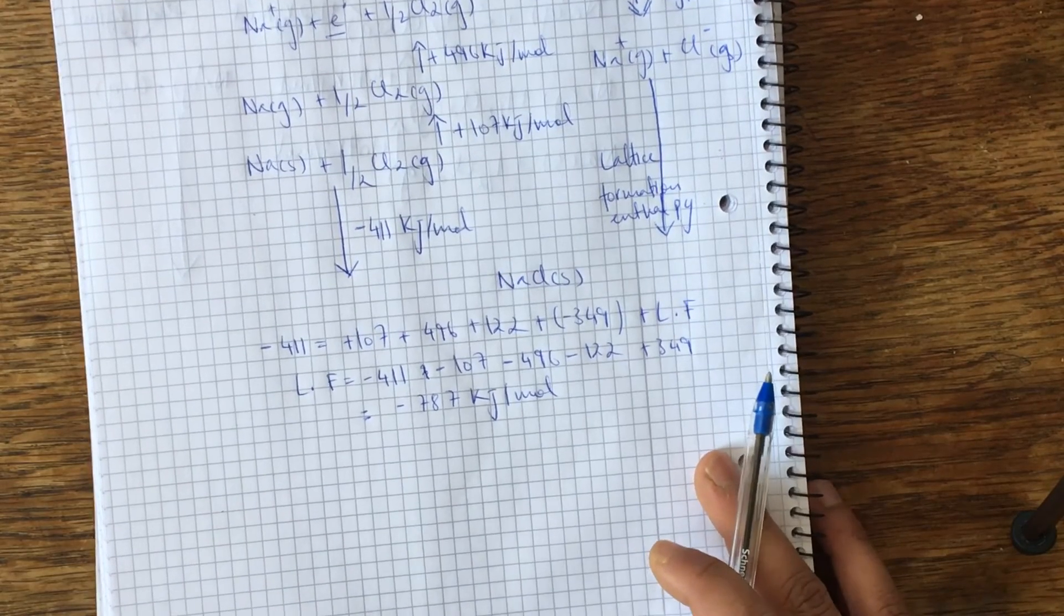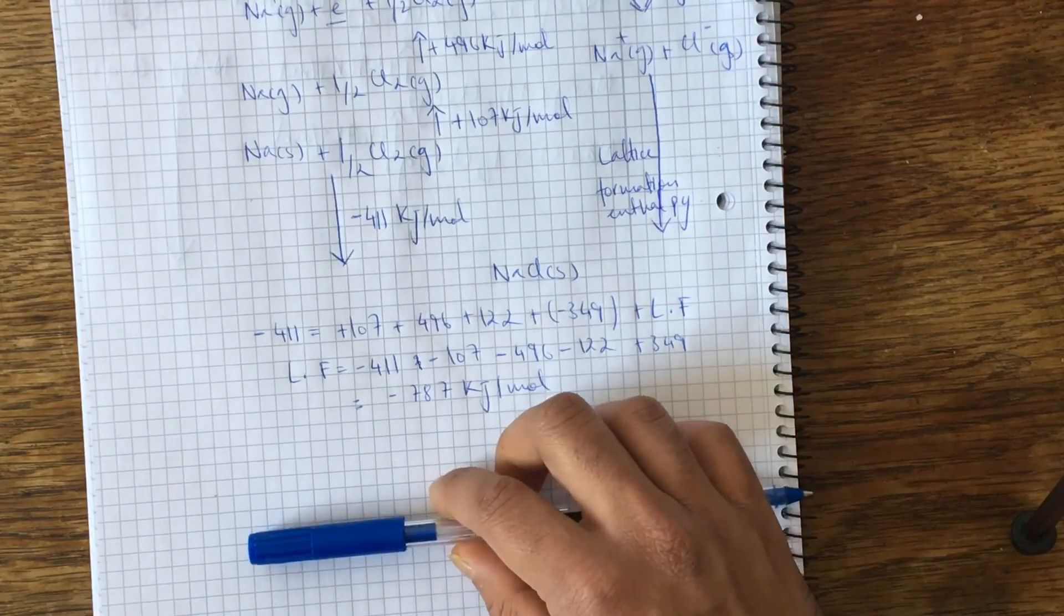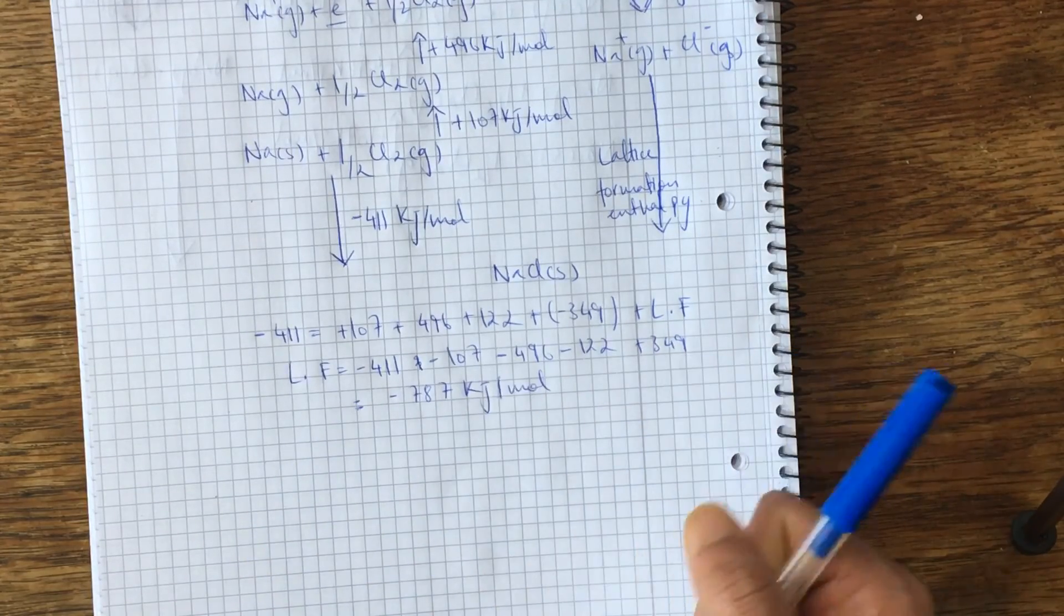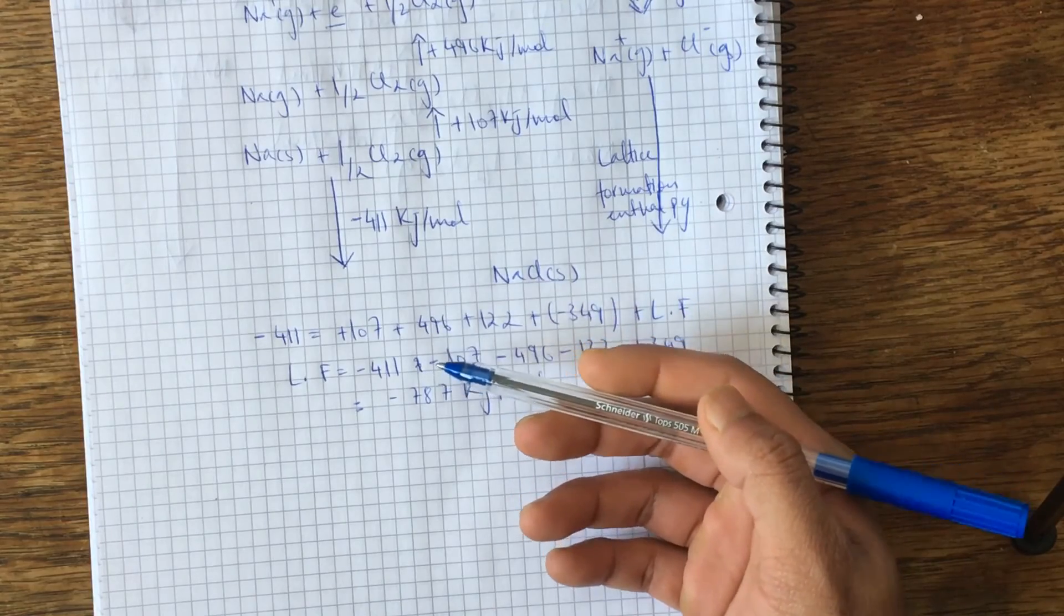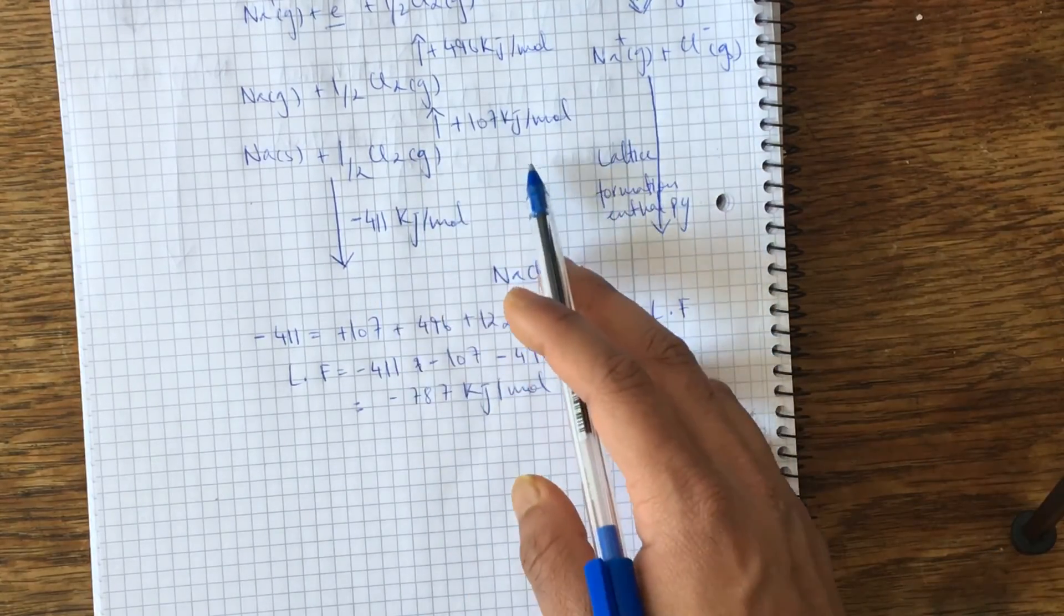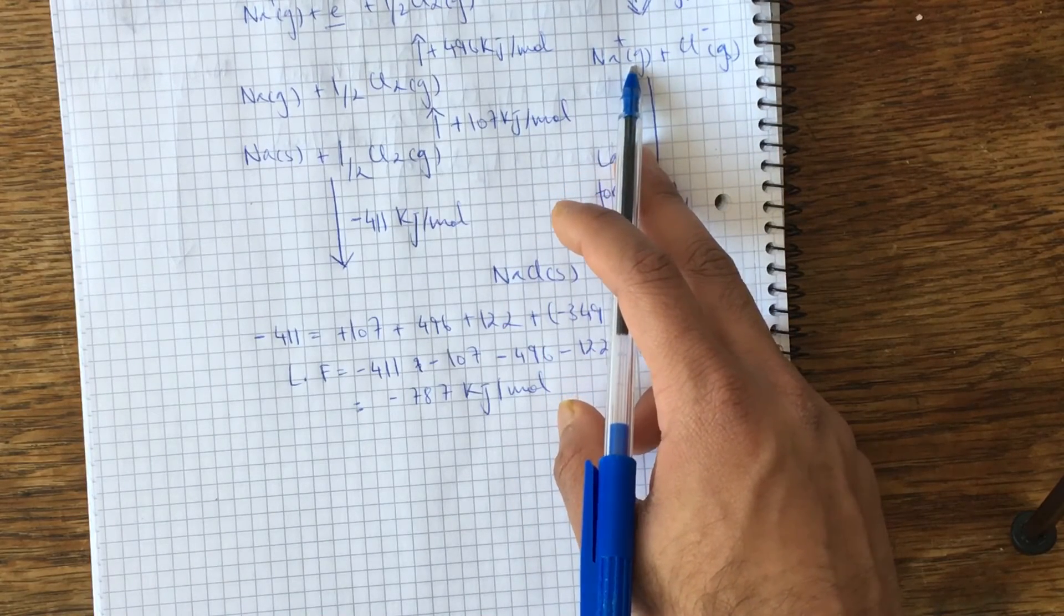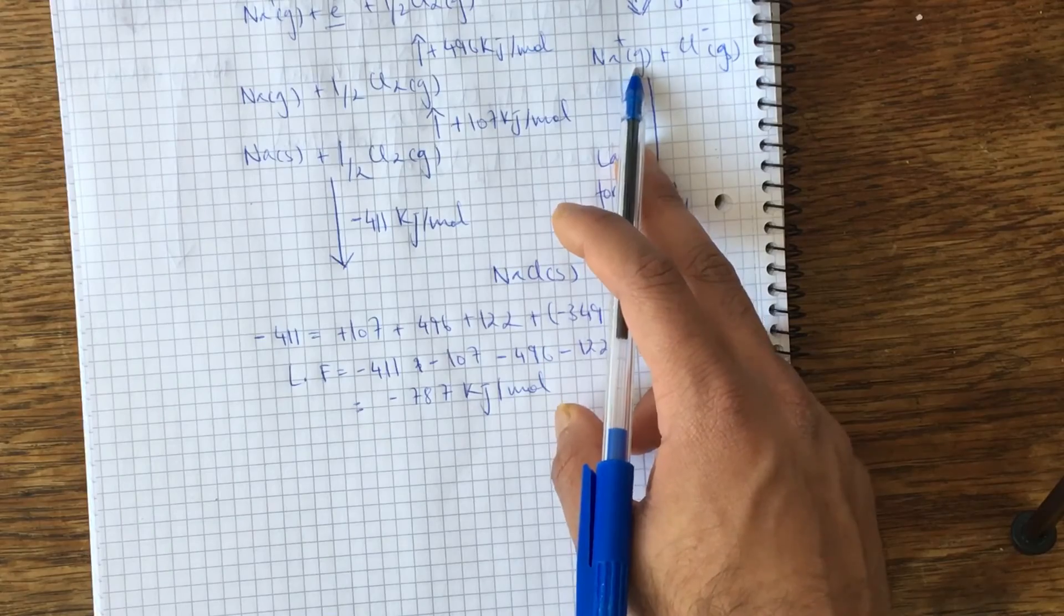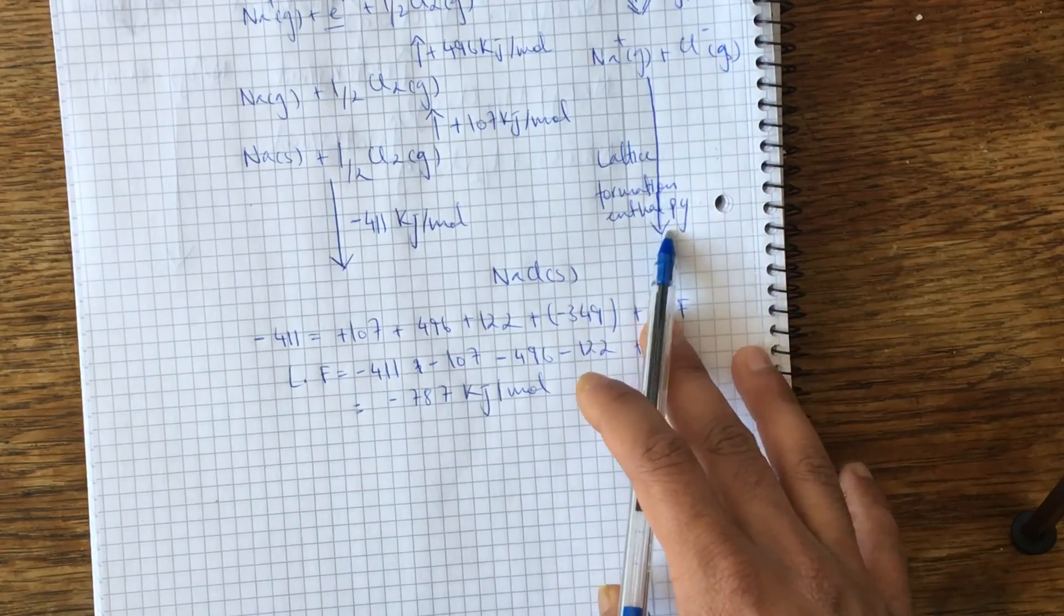And yeah, you get the lattice formation enthalpy. So basically, the Bornhaber cycle isn't that tough. You just have to break it down into singular steps. The goal, our goal basically, is that we need the elements in their gassy ionic gassy states in order for them to react, and eventually you get the lattice formation enthalpy.